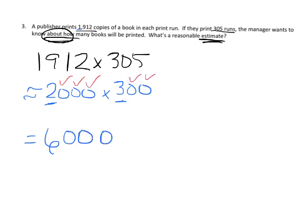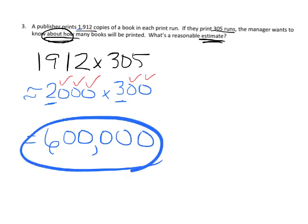1, 2, 3, 4, 5 zeros. So we know our estimation is about 600,000, and that's it for that problem.